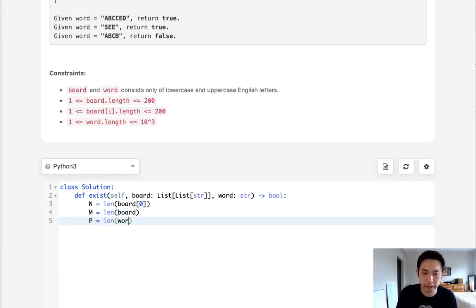I'm going to call this p, which is going to be equal to the length of the word. This is what's going to help us know if we could end our recursion—that we've found a word inside of our board.